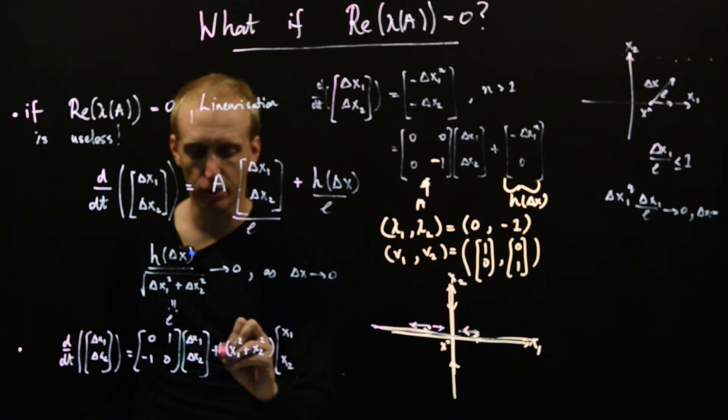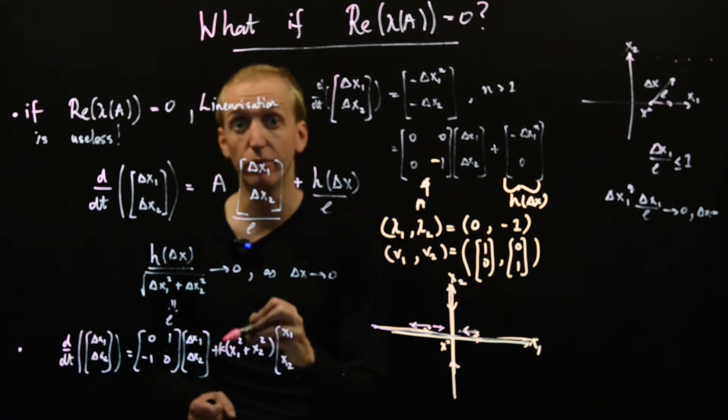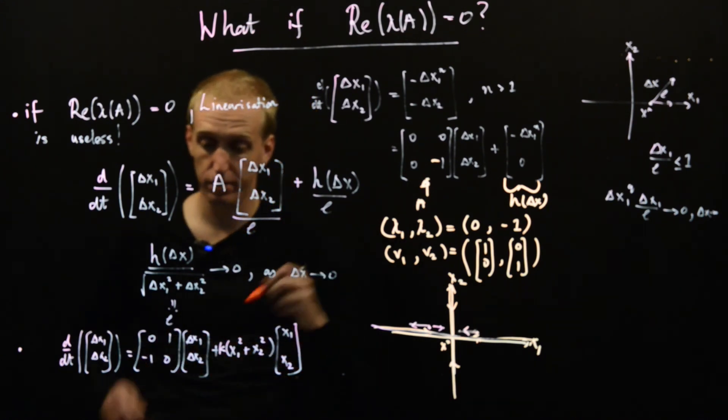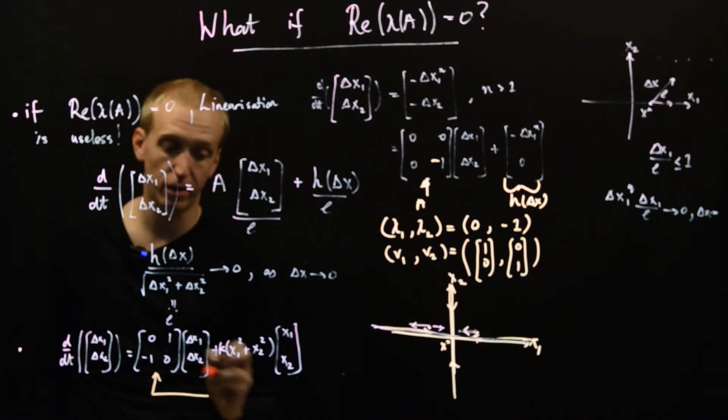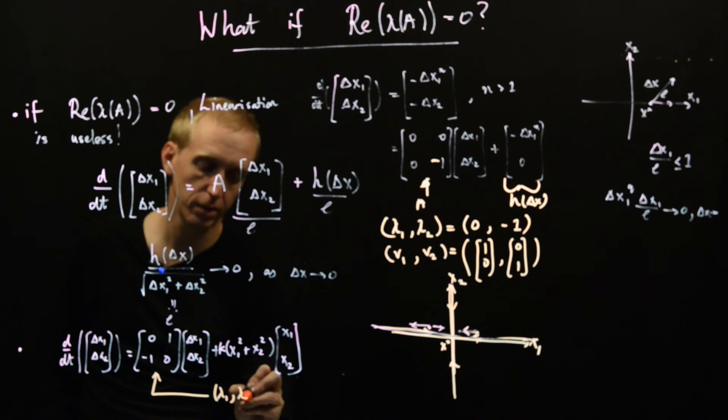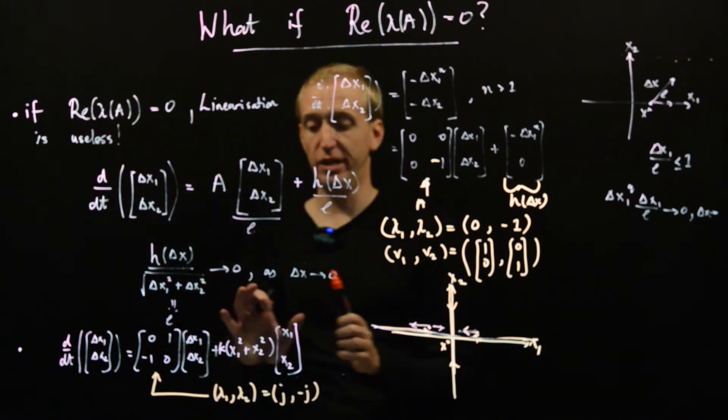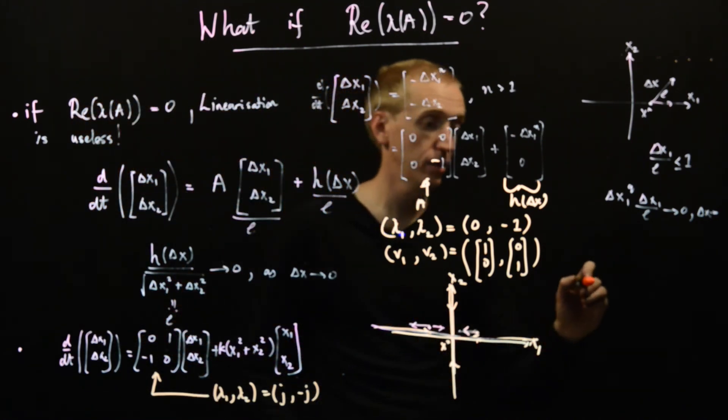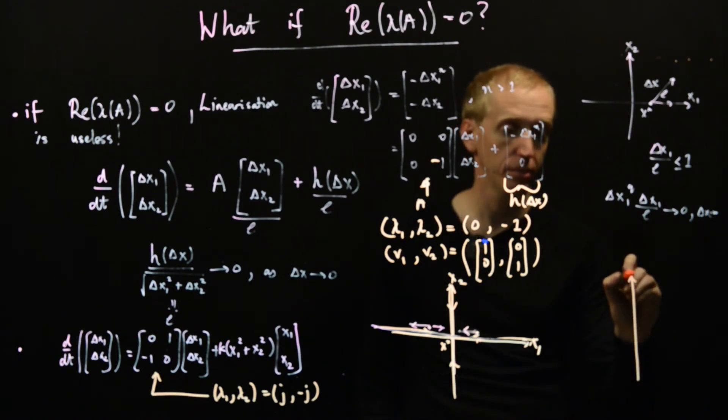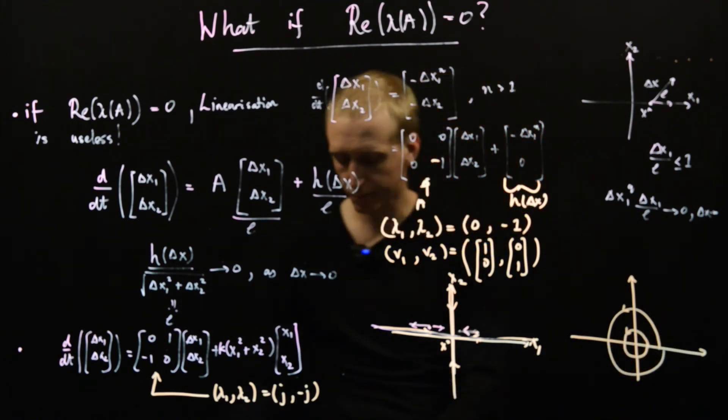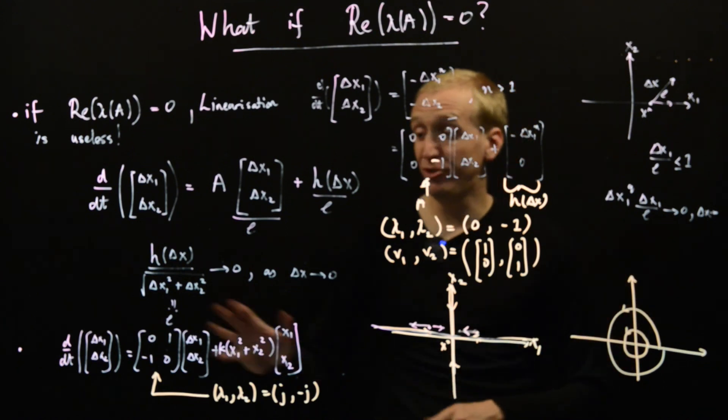And then here we have plus x1 squared plus x2 squared, x1, x2. And I've put a constant k here and k can be positive or negative. The key takeaways from all of this are this is a matrix with eigenvalues lambda 1, lambda 2 equal to j, minus j. And if we were to ignore this term and plot the phase portrait then we would get a picture that looks like this.